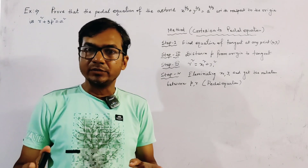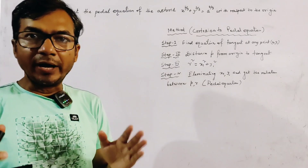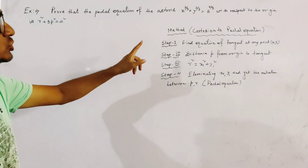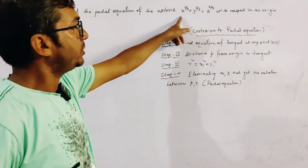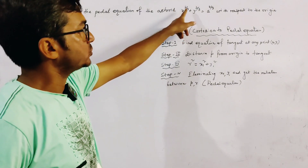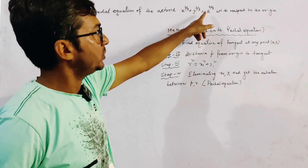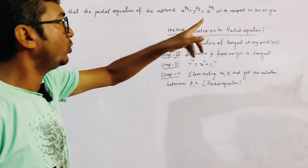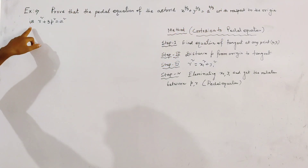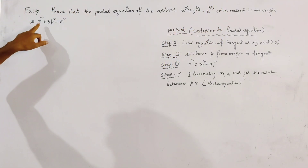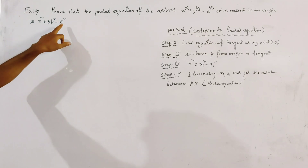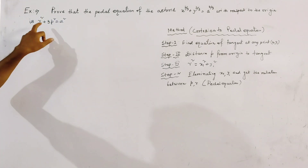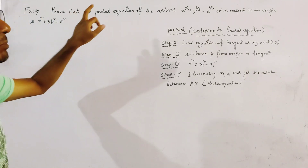The problem is to find the pedal equation of the asteroid x^(2/3) + y^(2/3) = a^(2/3) with respect to the origin. It is given by r² + 3p² = a². We have to prove this is the pedal equation of the asteroid.